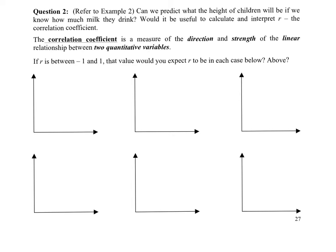As before, once we have a graphical depiction of our data, it can inform our statistical calculation. When it comes to two variables and scatter plots, a good statistical summary of a linear relationship is known as the correlation coefficient.